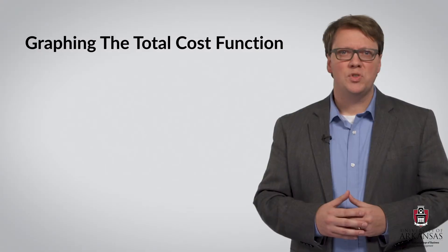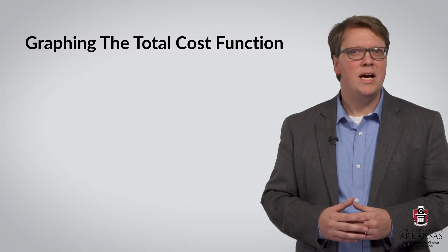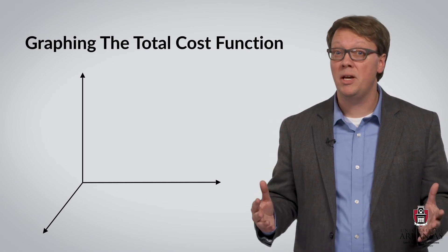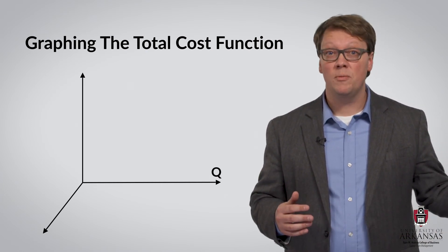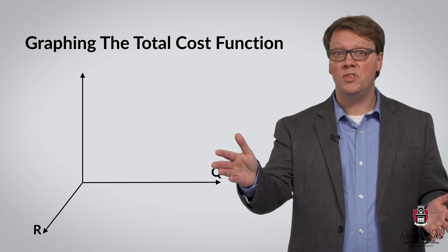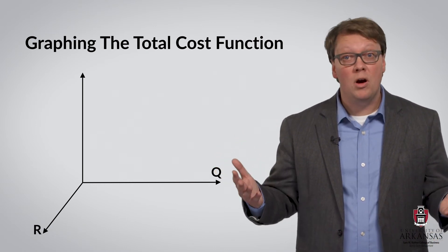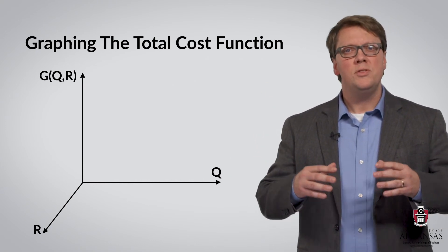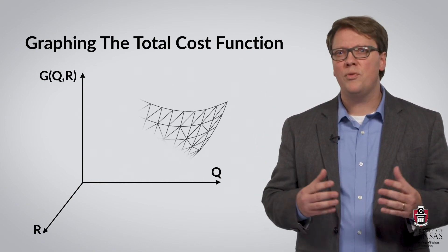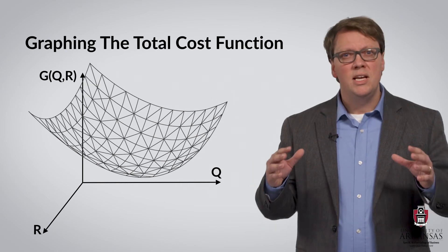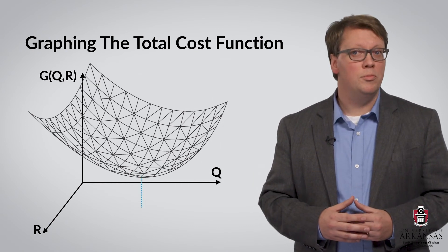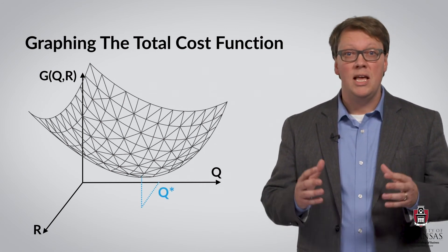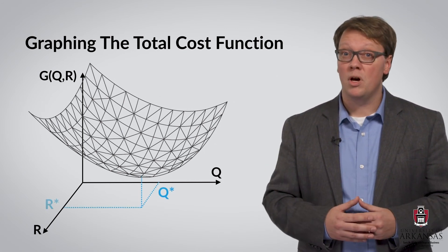If we want to graph this total cost function, we have to first remember that we are now in a three-dimensional space, where Q is on the x-axis, R is plotted along the z-axis, and total costs, G of Q and R, are shown on the y-axis. The total cost function then is roughly bowl-shaped, and we see that total costs are minimized when we choose the optimal order quantity Q star and the optimal reorder point R star.